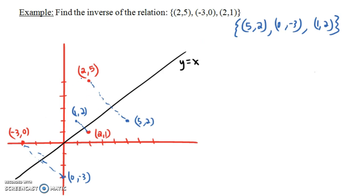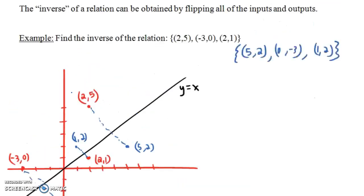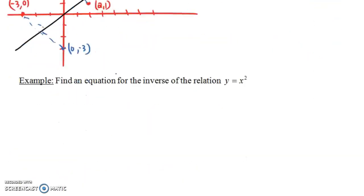So if you take your original relation, whatever it looks like, and you flip it across this line y equals x, you get the inverse relation. The inverse relation is obtained by flipping all the inputs and outputs.